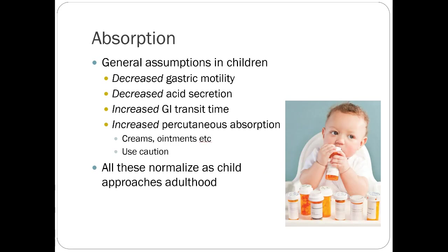General assumptions for absorption in children: decreased gastric motility, decreased acid secretion, increased GI transit time, and increased percutaneous absorption. For little kids, there's frequent stool at young ages that normalizes as they get older. For percutaneous absorption — creams and ointments — we have to be cautious. For steroid potency in a kid, you want to use a much less potent steroid over smaller body areas because it absorbs more readily into systemic circulation than in an adult.